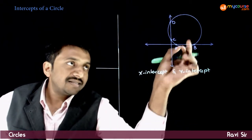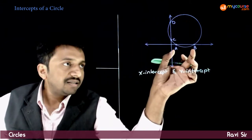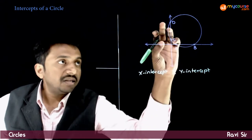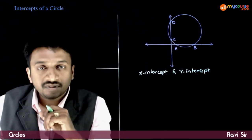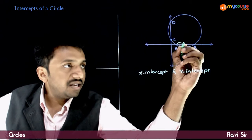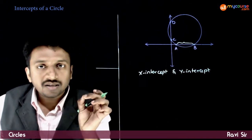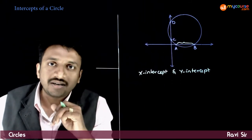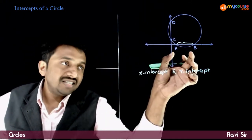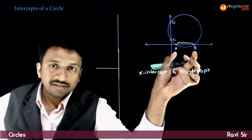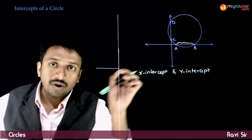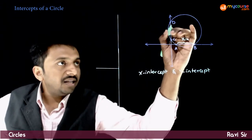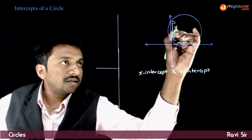Let us take this circle. Say the circle cuts the x-axis at two points A and B, and the y-axis at two points C and D. The distance between A and B is called the x-intercept, and the distance CD is called the y-intercept. So the distance between the two points where the circle cuts the x-axis is the x-intercept.